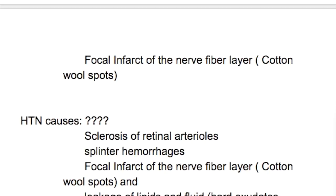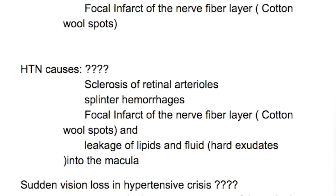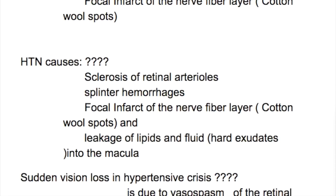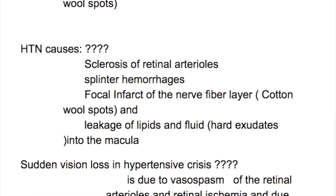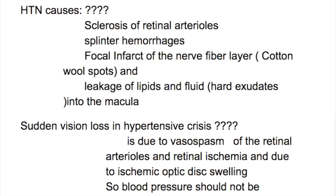Why is there sudden visual loss in hypertensive crisis? Sudden visual loss in hypertensive crisis is due to vasospasm of the retinal arterioles, retinal ischemia, and ischemic optic disc swelling. Blood pressure should not be reduced precipitously because it may cause optic disc infarction from hypoperfusion.